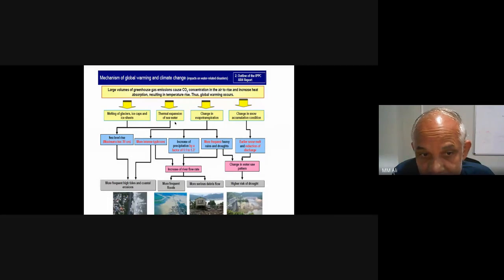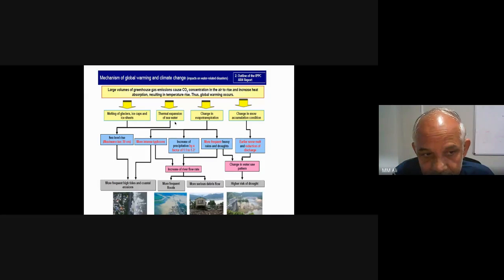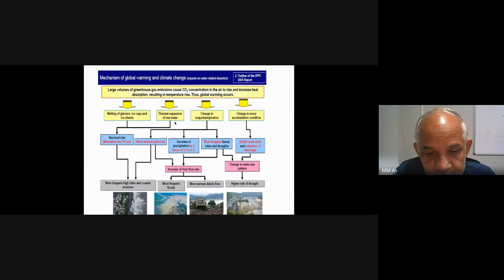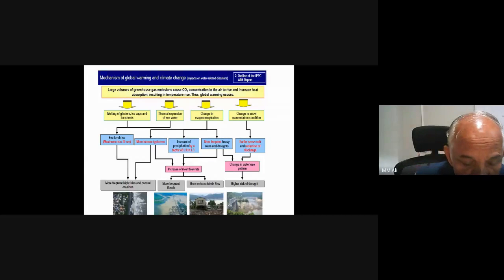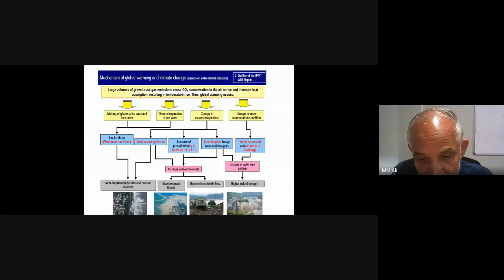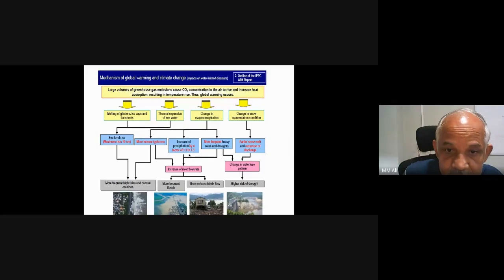Global warming and climate change scenarios include melting of glacier ice and ice caps, thermal expansion of seawater when sea surface temperature and even subsurface ocean temperature increases, changes in evapotranspiration, and changes in snow accumulation. Melting of land ice will also cause sea level rise. Ultimately, more frequent high tides, coastal erosion, and more frequent floods are likely to occur, along with higher risk of drought.